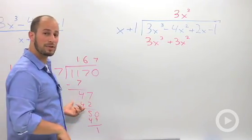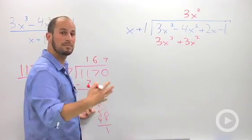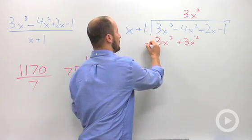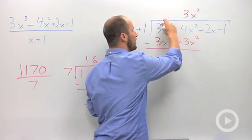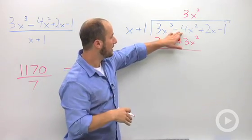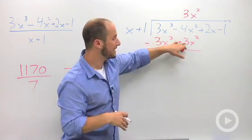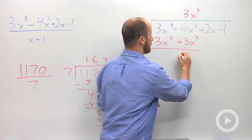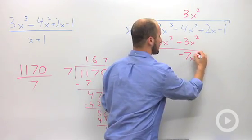Just like we did over here with our numbers, we need to subtract. So subtraction: 3x cubed minus 3x cubed, those cancel, which is what we wanted. And the negative 4x squared minus 3x squared—make sure you distribute that negative sign—becomes negative 7x squared.